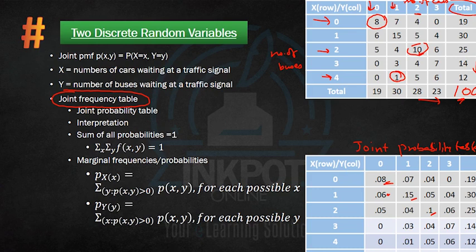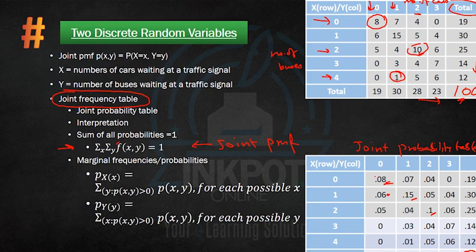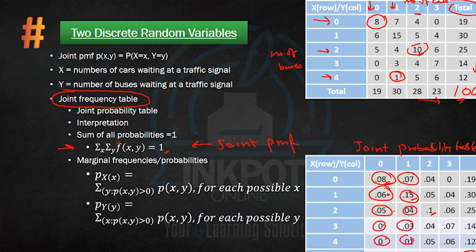Observe that the sum of all the probabilities is one — you can pause the video and verify this. Using notation, if f(x,y) is the joint probability mass function (joint PMF), then the double summation over all values of both x and y gives us one. We are summing up all cells row by row and column by column, and this double summation over all values of y and x gives a total probability equal to one.